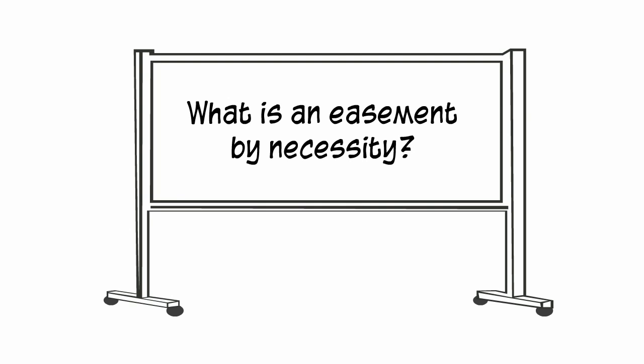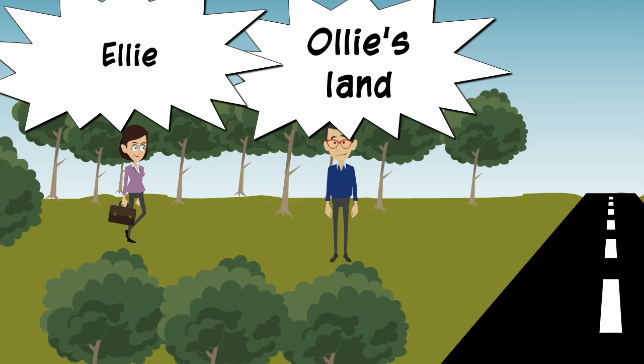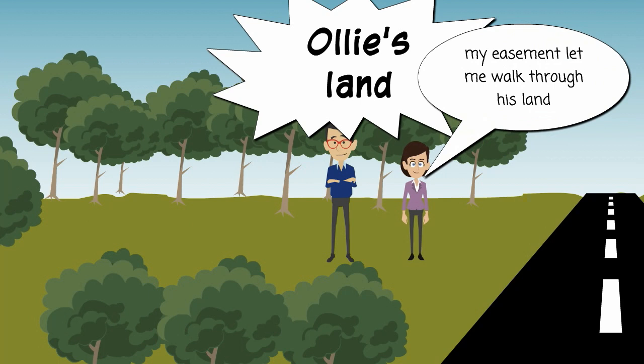In this video, we will discuss easements by necessity. In an easement, someone is allowed to use someone else's land for a certain purpose, such as Ellie here, whose easement allowed her to walk through Ollie's property.